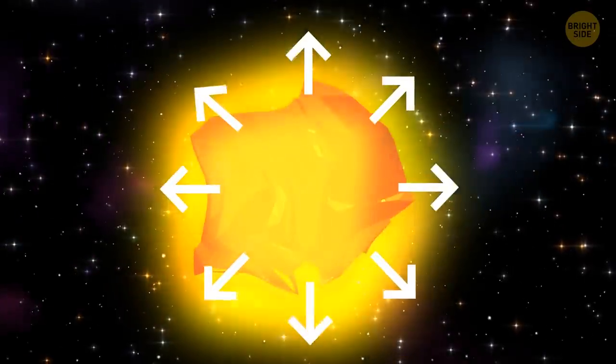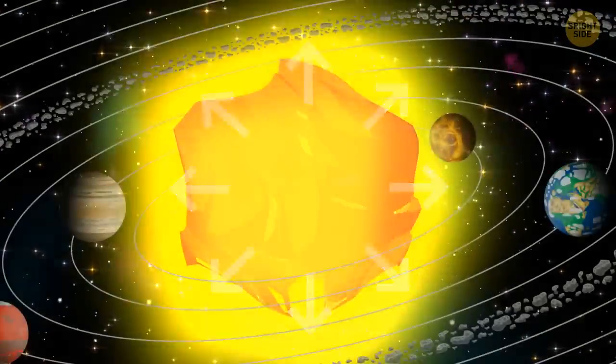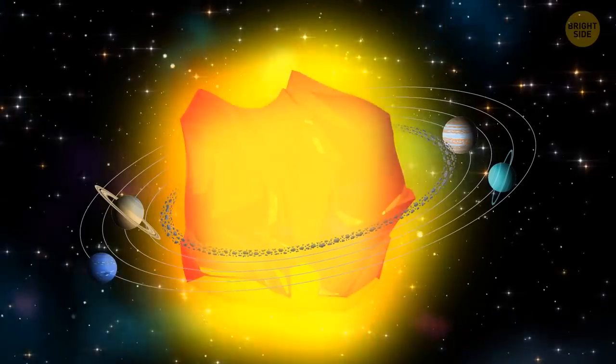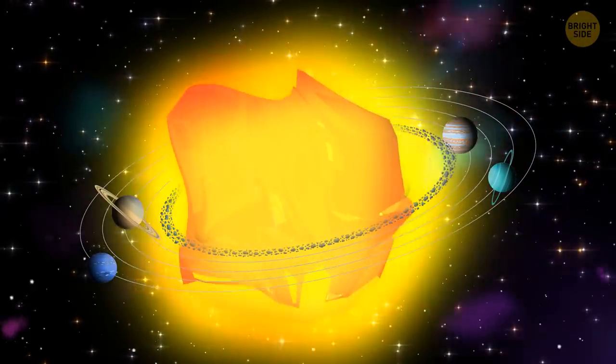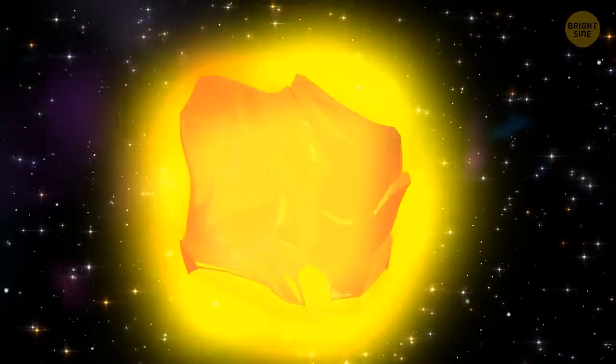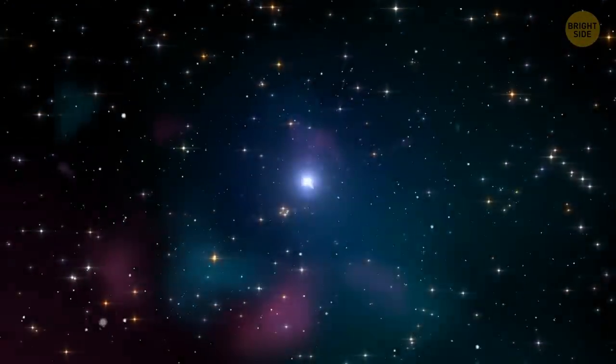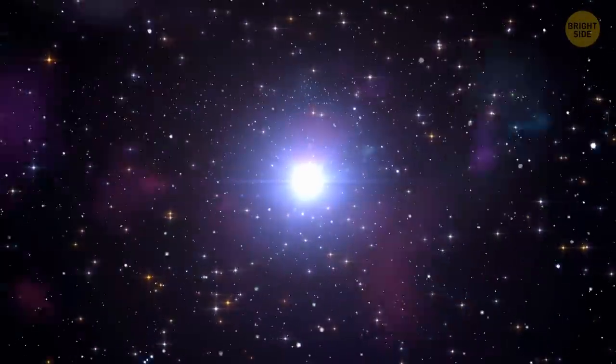That's what's happening to Betelgeuse right now. Now, it's already so big that if you put it in the center of our solar system, its edge would touch the asteroid belt between Mars and Jupiter. Betelgeuse will continue to expand until it exhausts its fuel completely. Then the gravity will win. The star will shrink in size. And then an enormous boom will happen.